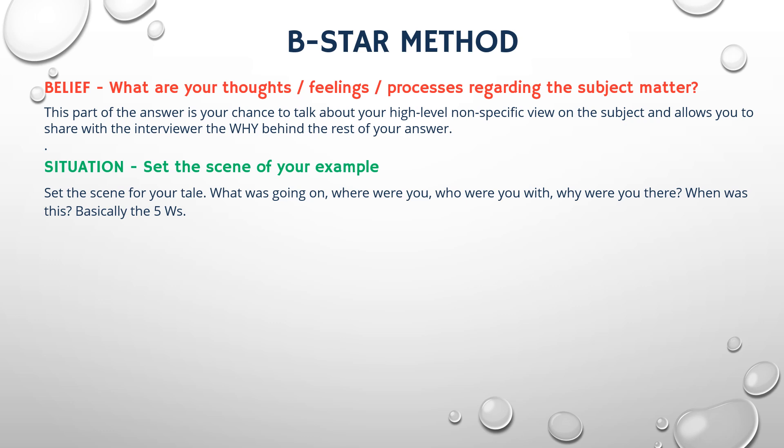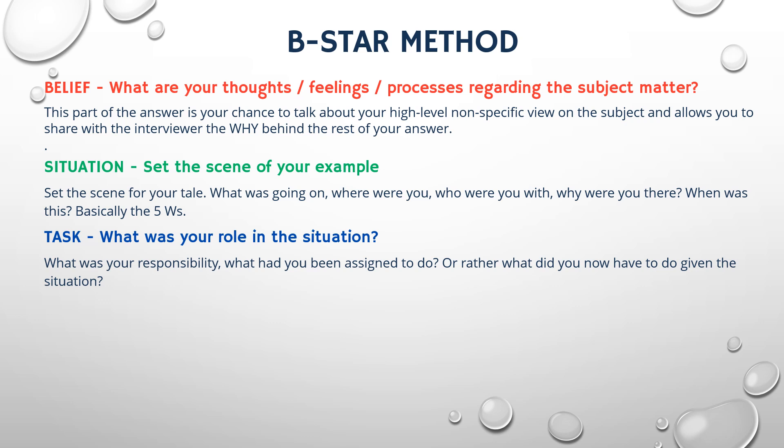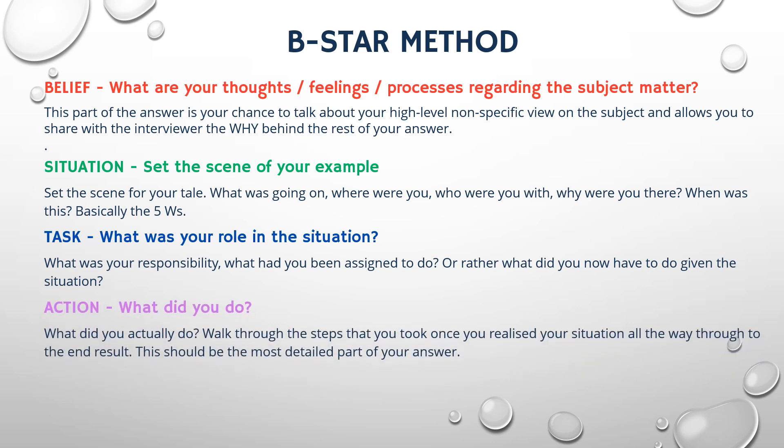Following the situation we have T, for Task. Explain your specific role and responsibilities in the situation. Up next we have the most important section and that is A, for Action — or Activity if you prefer. Describe the steps you took to achieve the desired outcome and explain the rationale behind your actions. This part of your answer should be the most detailed as it shows the interviewer just what you are capable of doing.